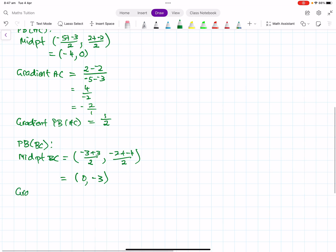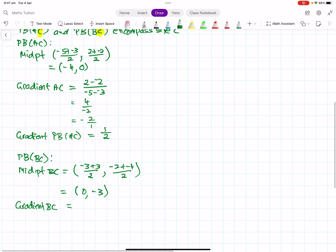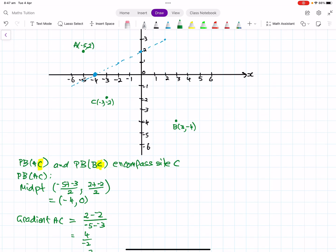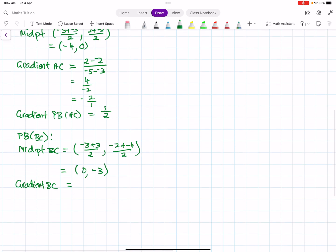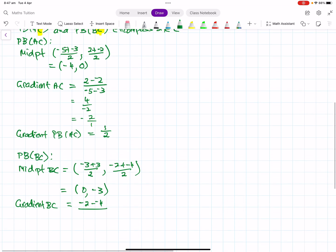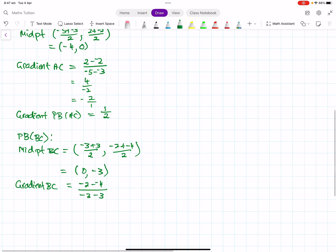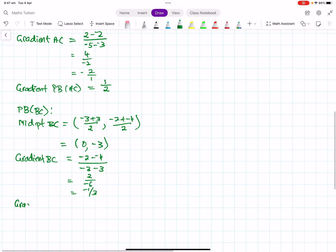And then if we work out the gradient of BC. So this is quite the procedure. And we have to do it three times in this case. So the gradient of BC is rise over run. So it will be negative 2 take away negative 4 over negative 3 take away 3. So that gives us 2 over negative 6, which is negative 1 third. So that means the gradient of the perpendicular bisector of BC will be flip it upside down, change its sign. So that will give us 3 over 1.